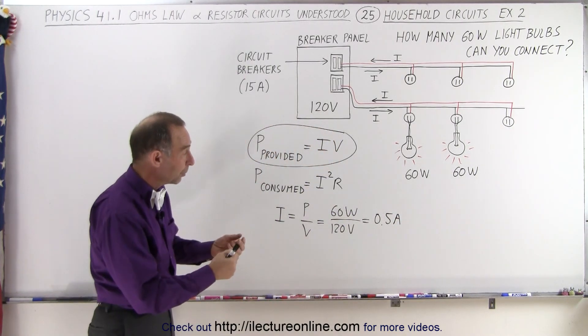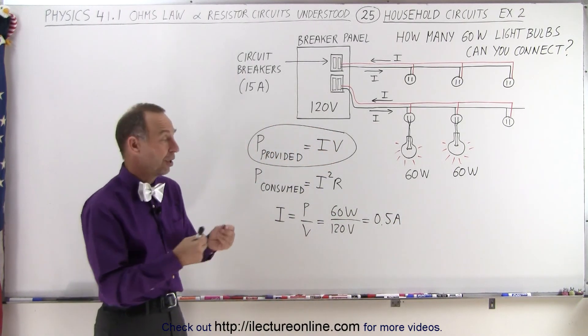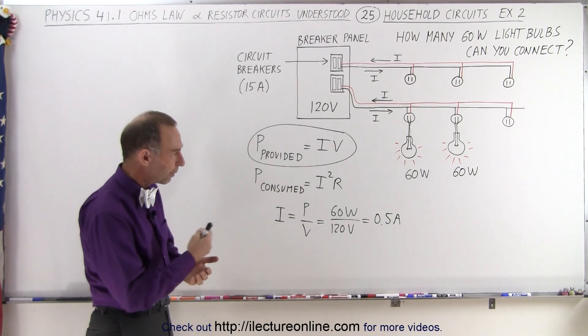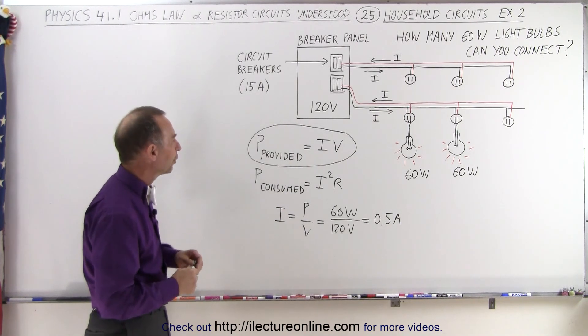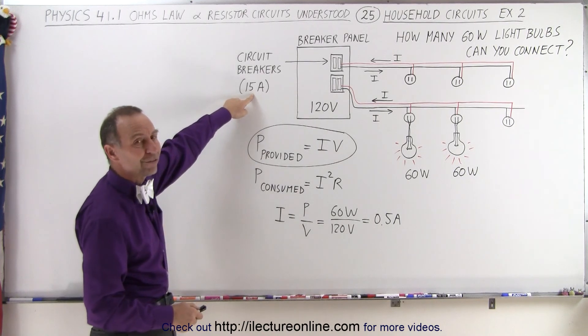Now you hook up two light bulbs, you will draw one amp of current. Three light bulbs, one and a half amps. Four light bulbs, two amps and so forth. And you have a total of 15 amps available.